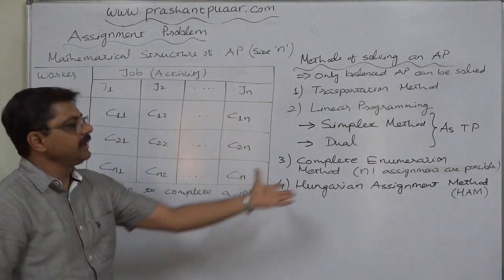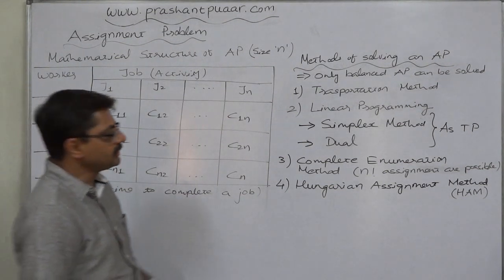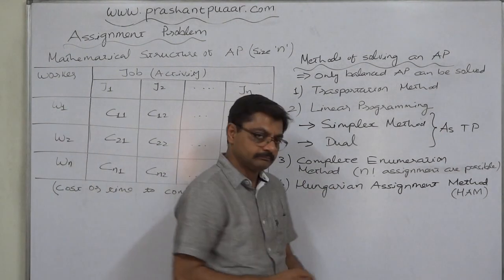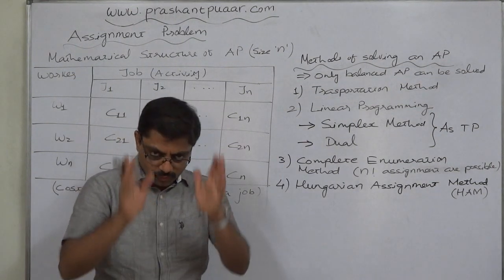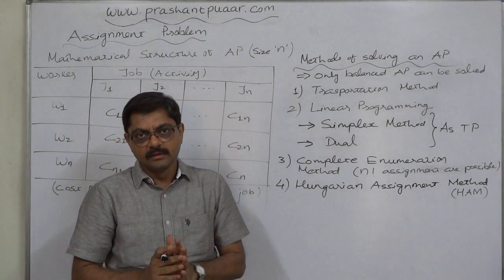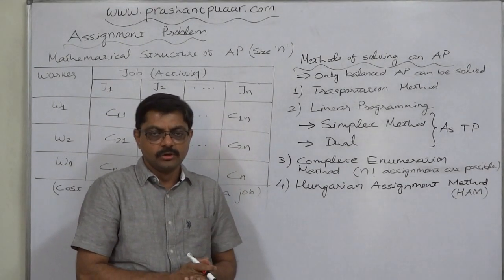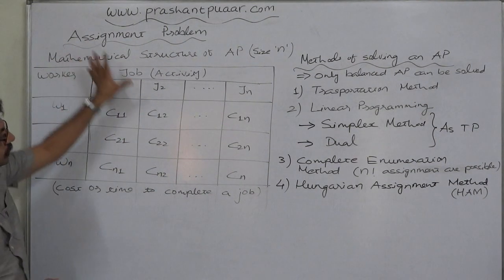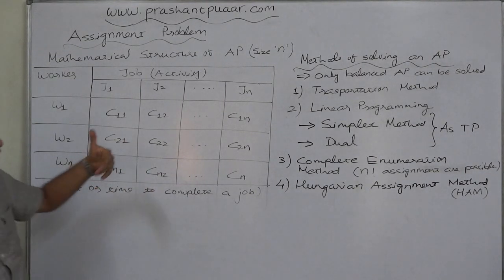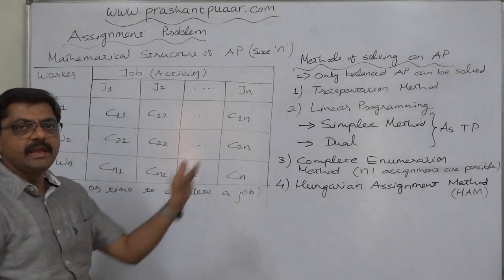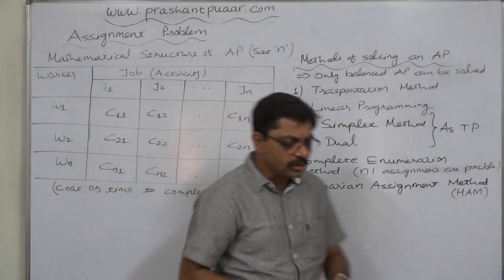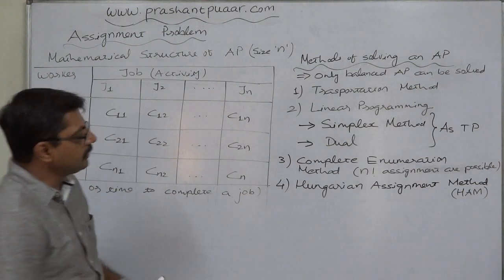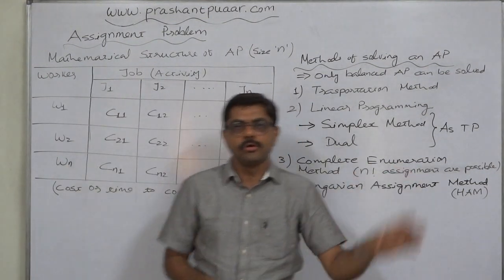The third method is complete enumeration. We make a list of all different possible assignments, similar to a trial-and-error method. We list all possible assignments with their respective costs or times, calculate the total cost or total time for each option, and then select the assignment with the lowest cost or lowest time.